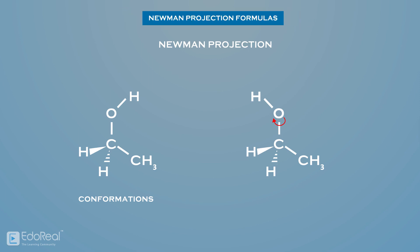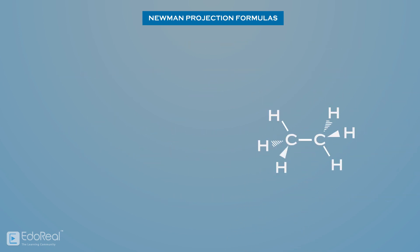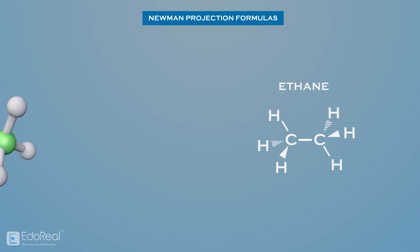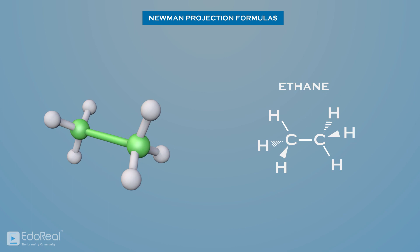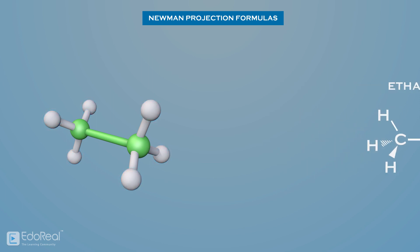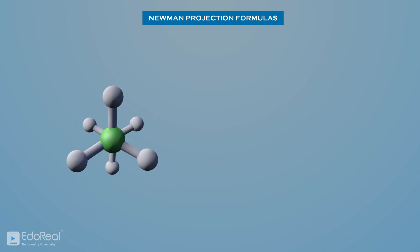A Newman projection visualizes the conformation of a specific bond of interest from front to back — for example, the carbon-carbon bond in ethane. If we look at the three-dimensional structure of ethane, we can see two carbon atoms, which are shown by green color, and the six hydrogen atoms are shown by white color. To understand the Newman projection formula of ethane, let us rotate this 3D structure along the carbon-carbon bond. After rotating this structure, it looks as follows.